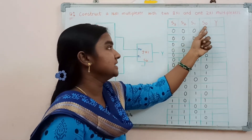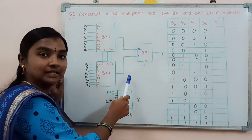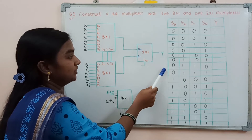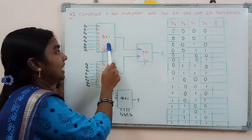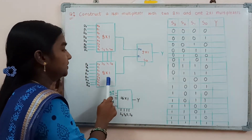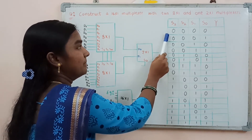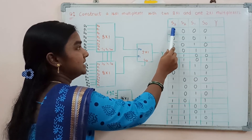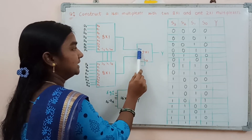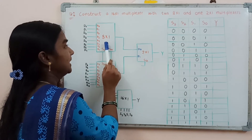Based on the binary data on the selection lines, for the first 8 combinations it is going to select the upper multiplexer, and for the last 8 combinations it is going to select the lower multiplexer. Considering the first combination, the selection line S3 bit is 0, so it is going to select data bit D0 and select the upper 8-to-1 multiplexer.